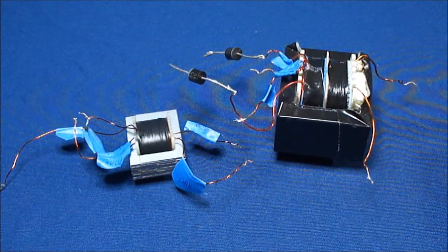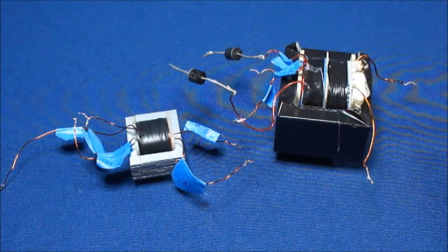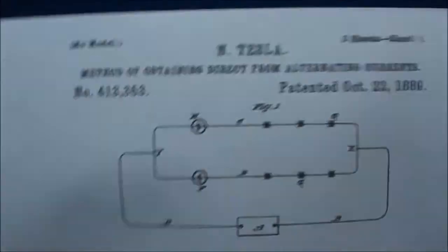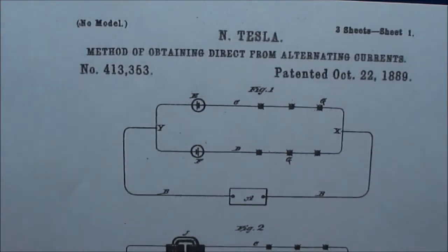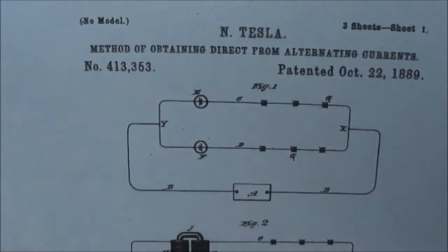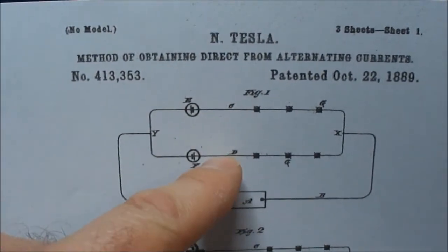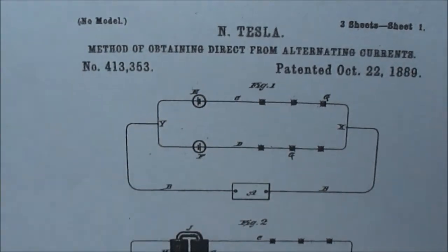Probably wondering why I have the diodes on the bifiler secondary. I was using Tesla's patent to turn the AC into DC using the two halves of the bifiler coil with a diode on each.